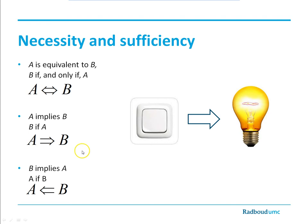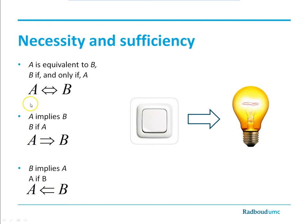In the second case, A implies B means A is a sufficient cause for B, but not a necessary cause. If this light switch is switched on, the light becomes on — but if there were a second light switch, B would also be on. So A being on means B is on, but B can also be on if another switch is flipped. Finally, B implies A means A is a necessary cause. If the light is on, then the light switch also has to be on. However, it's not a sufficient cause — if there were two switches in sequence rather than parallel, both would have to be on for B to be on.